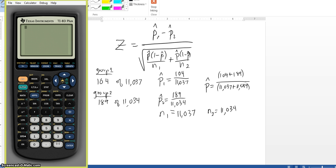Okay, so I'm going to start by calculating the pooled P hat and then using that to get the standard error. For the P hat, I need 104 plus 189 divided by 11,037 plus 11,034. Okay, so there's my pooled P hat and I'm going to store that value as X.